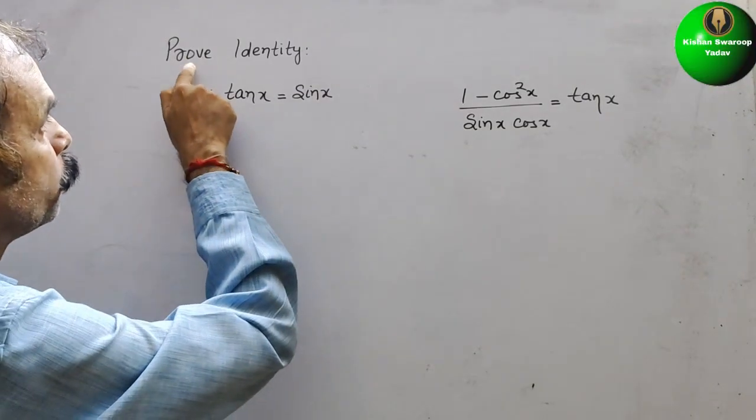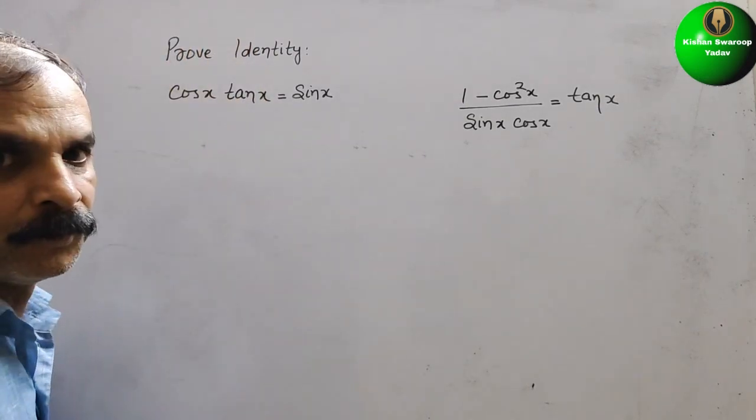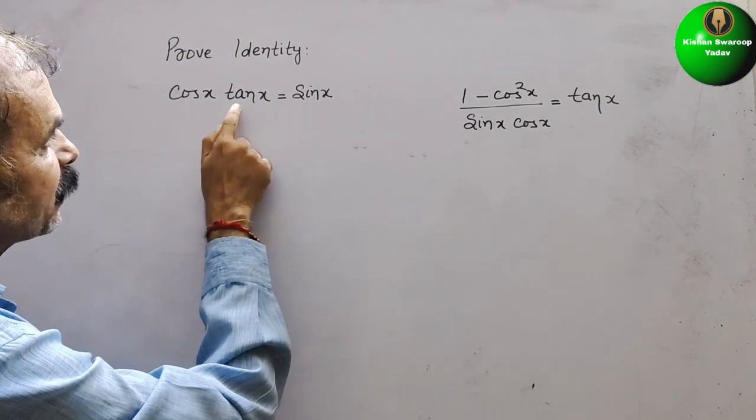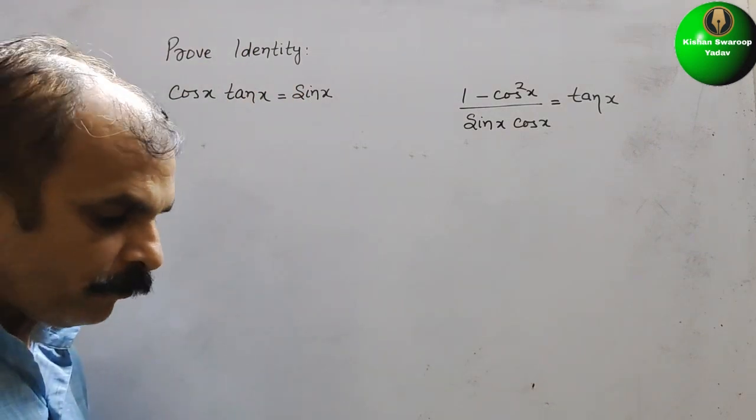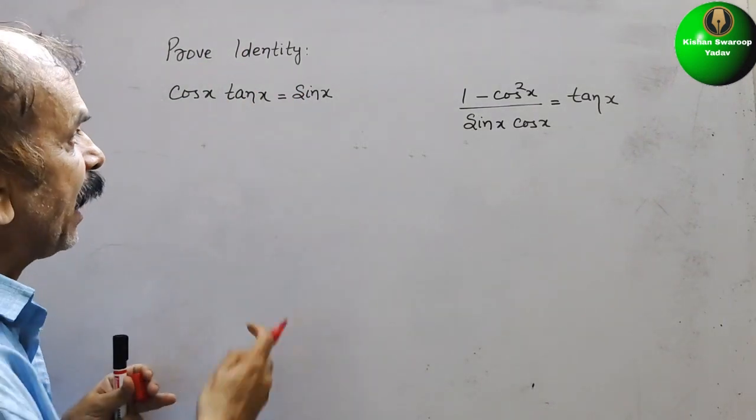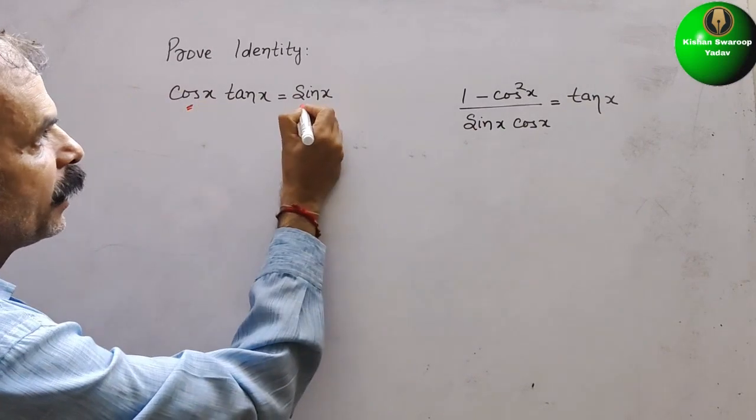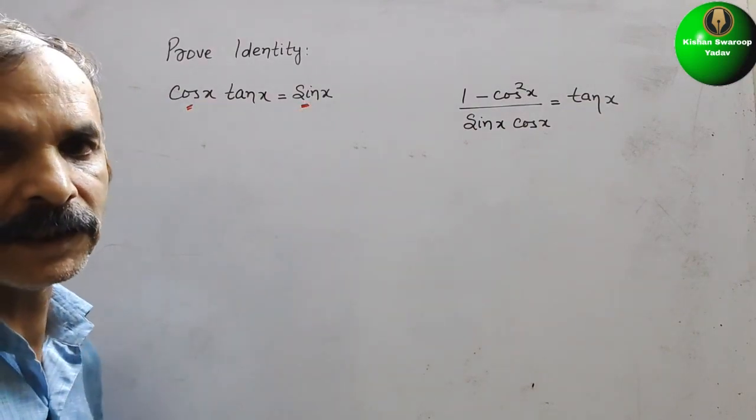Your question is prove identity. They have given cos x tan x is equal to sin x. Now if you see, sin x and cos x are basic of everything.